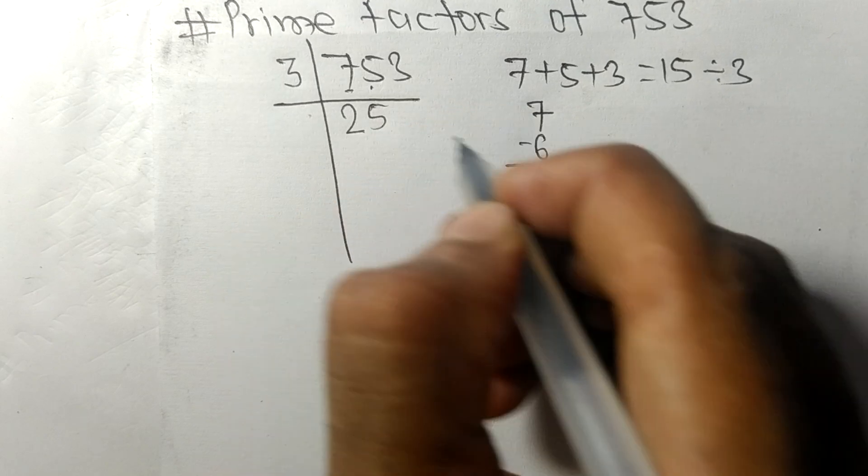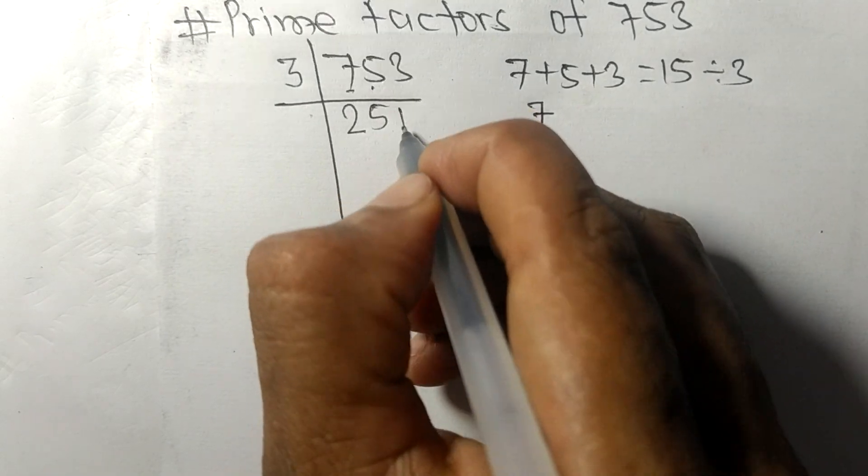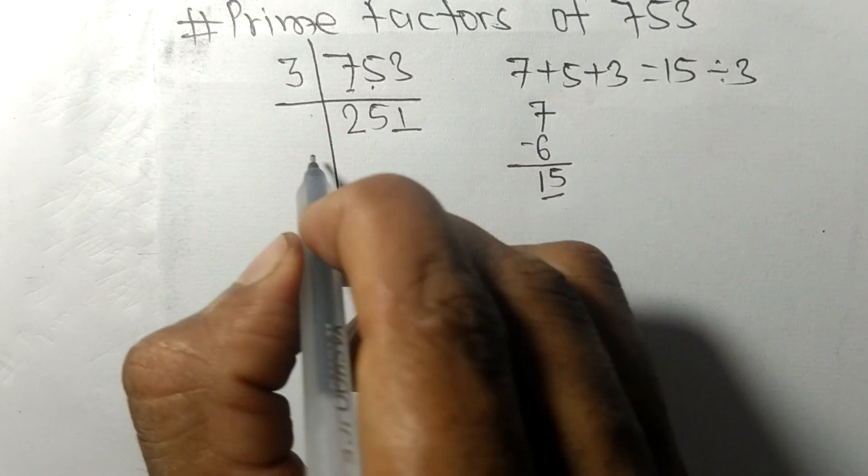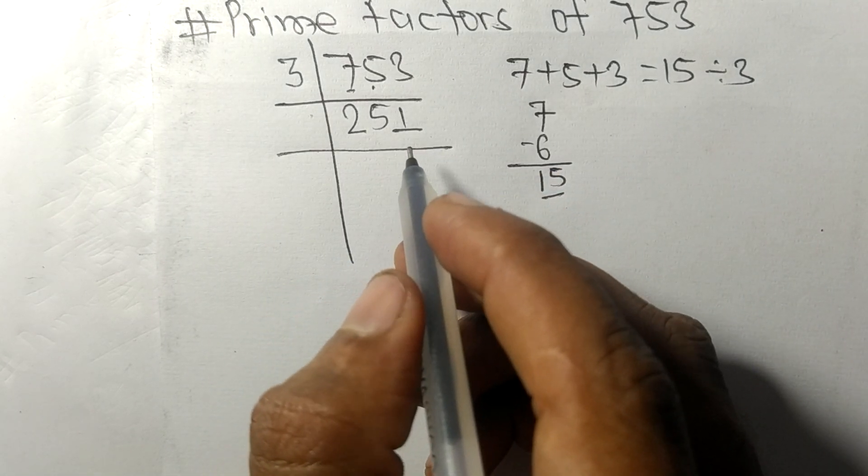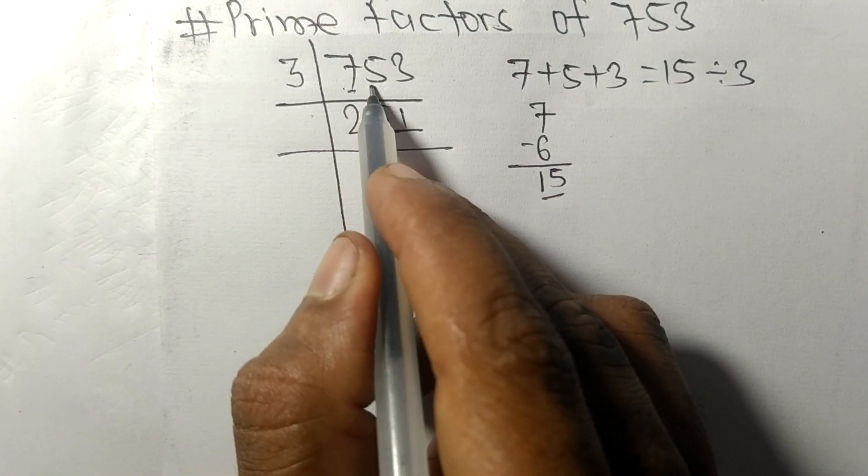3 times 5 means 15, and 3 times 1 means 3. So now we got 251 on dividing 753 by 3.